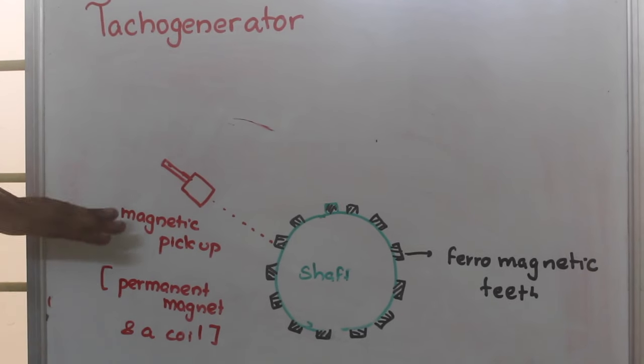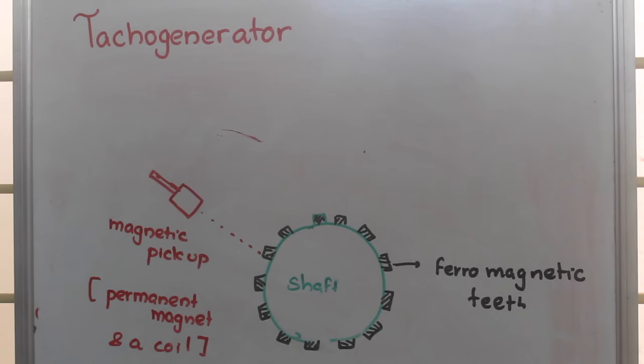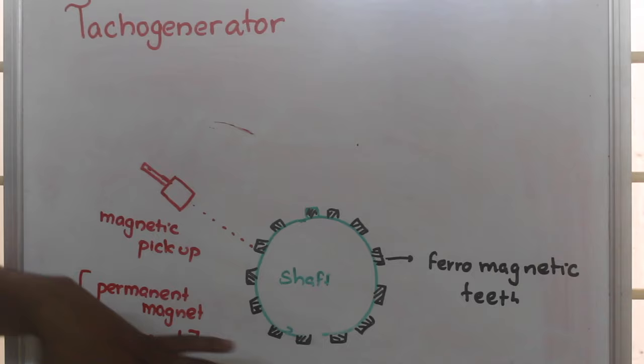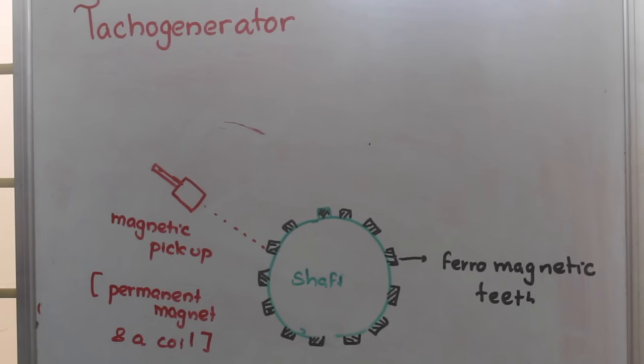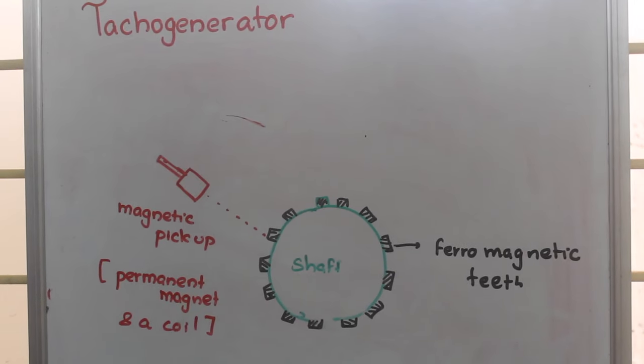This is how we use a tachogenerator. This is how we construct a tachogenerator by which we are able to find the RPM by a non-contact type arrangement. That's about tachogenerators. Thank you.